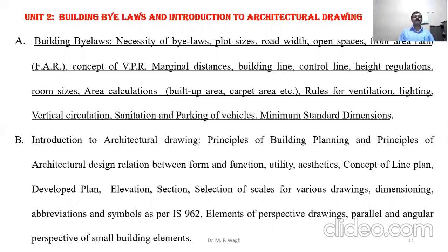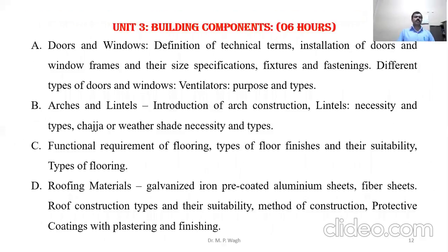The second part of Unit 2 is Introduction to Architecture Drawing, which includes different architectural principles such as aspect, prospect, roominess, grouping, sanitation, elegance, and economy.